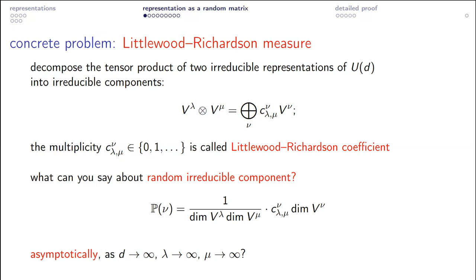The probability of ν depends on two things: first, our beloved Littlewood-Richardson coefficient c^ν_{λμ}, and second, the dimension of the representation. This probability measure is proportional to the total dimension of all irreducible components of your favorite type. So the problem has become probabilistic: what can you say about the statistical properties of ν in the limit when parameters tend to infinity — when d tends to infinity, when λ tends to infinity, when μ tends to infinity?